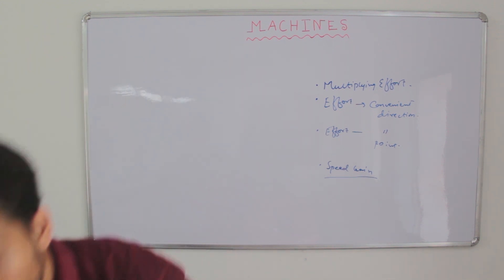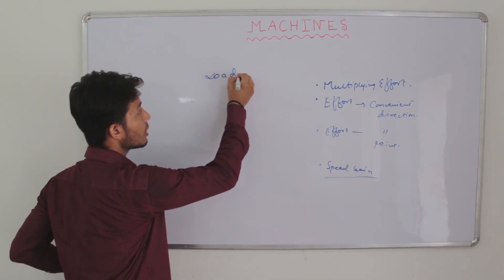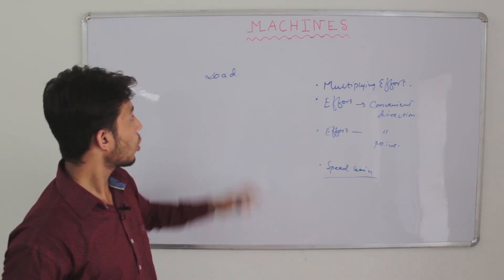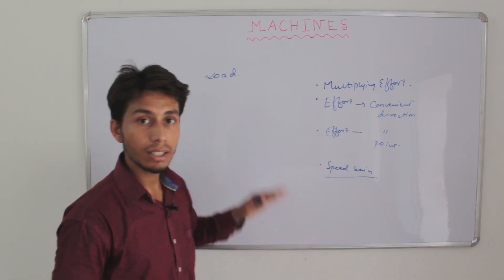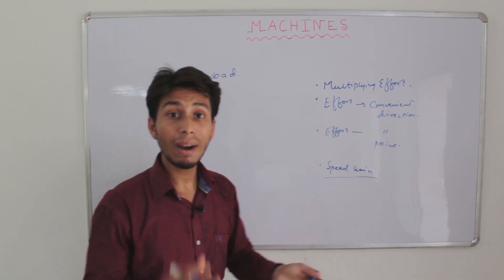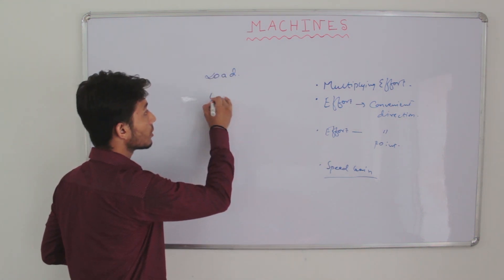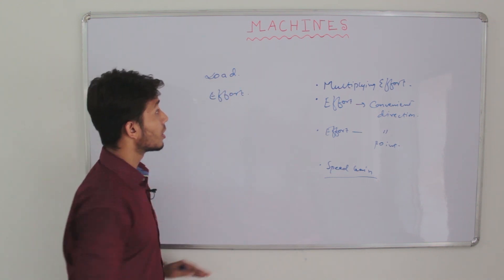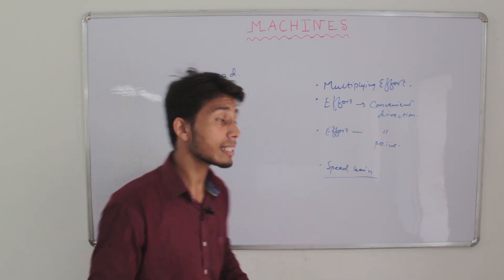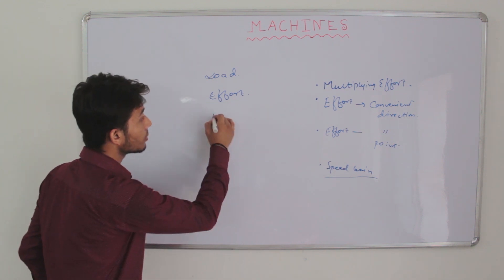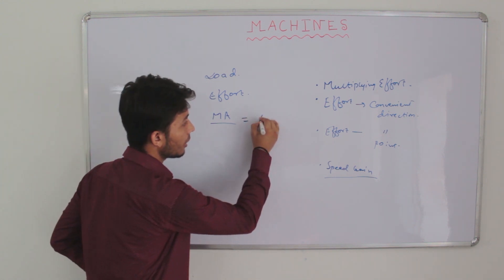Now let's look at some technical terms. The first is load — any force that the machine has to overcome is called the load. In the case of a pulley, the bucket of water that the pulley has to pull is the load. The second term is effort — the force we apply to overcome the load is called effort.